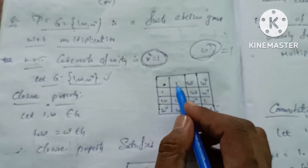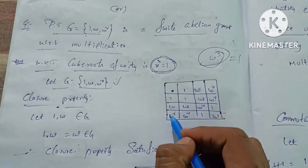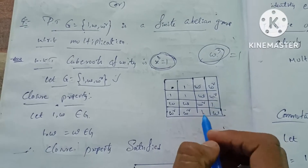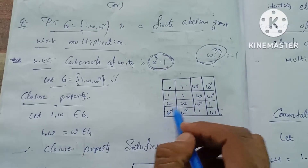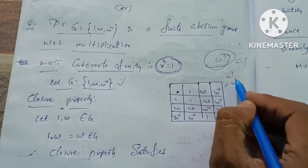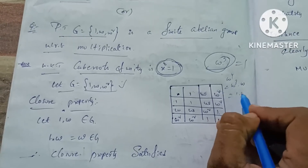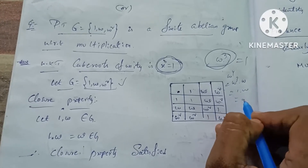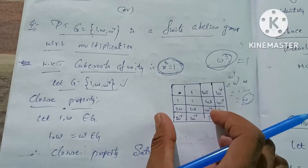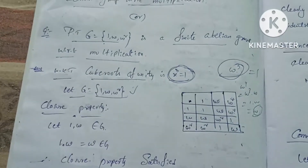Omega squared into 1 is omega squared. Omega squared into omega: omega cubed equals 1. Omega squared into omega squared is omega to the power 4, which equals omega cubed times omega, giving 1 times omega equals omega. From the composition table, we can see the closure property.